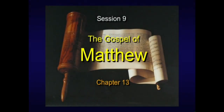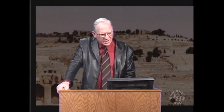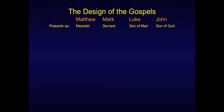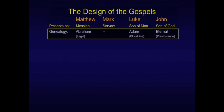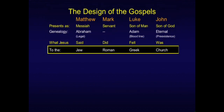We're in Session 9 of the Gospel of Matthew, and we're going to explore Chapter 13. I want to keep the broad view in front of us — the design of the Gospels. Matthew, Mark, Luke, and John present, respectively, the Messiah, the Servant of God, the Son of Man, and the Son of God. Matthew emphasizes what Jesus said, Mark what Jesus did, Luke what he felt, and John who he actually was. They had different addresses in mind: Matthew to the Jew, Mark and Luke to the Roman and the Greek, and John to the church.